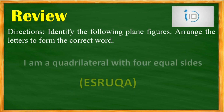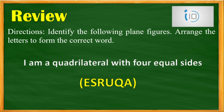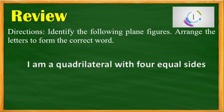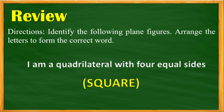And the next one: I am a quadrilateral with 4 equal sides. You have 10 seconds. Your timer starts now. Time's up. The correct answer is square.